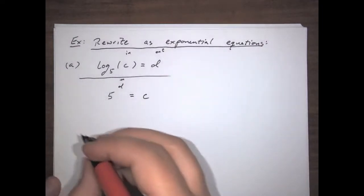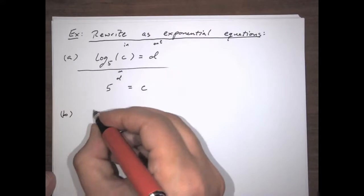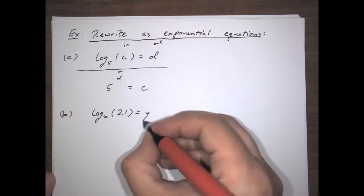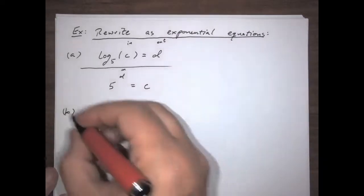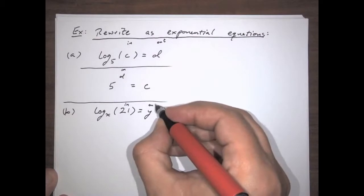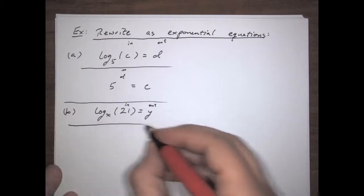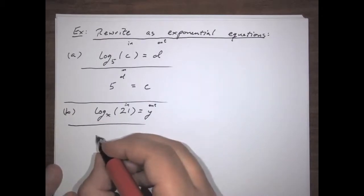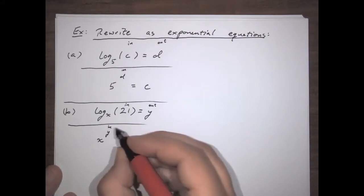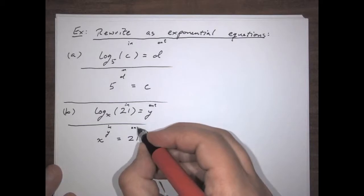And then if we were to try something like log base x of 21 equals y — once again, we have an input and an output in logarithm form that are going to get switched when we go to exponential form. The base is still the base, but now the former output becomes the input and the former input becomes the output. So now it's x to the y equals 21.